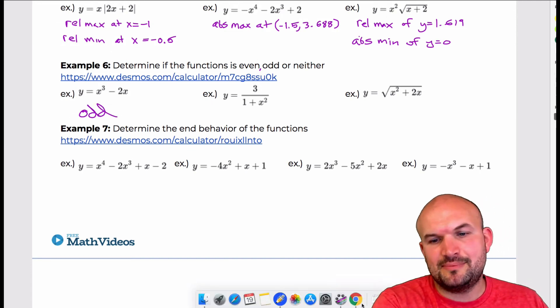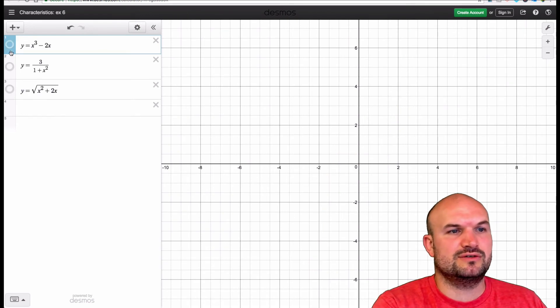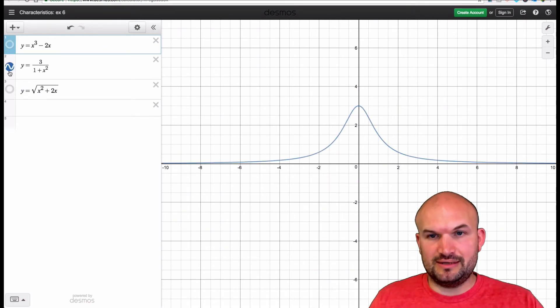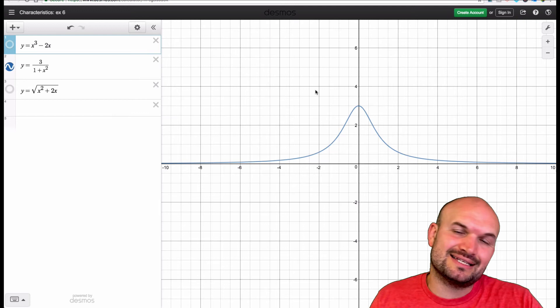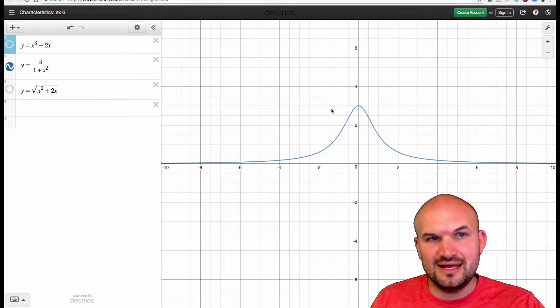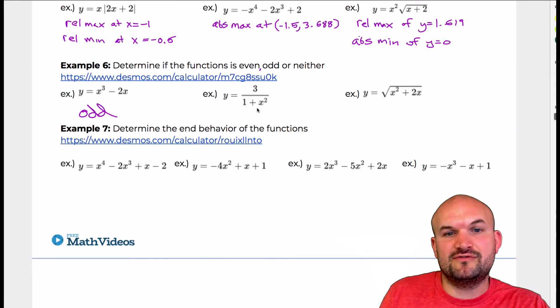All right, next example is y equals 3 to the x. You can see that everything to the right of the y-axis is exactly the same as everything to the left of the y-axis. So therefore, this function is symmetrical about the y-axis, so it is even.